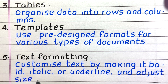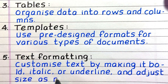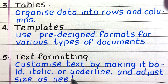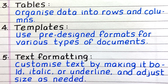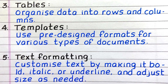Last feature, fifth one: Text Formatting. MS Word can customize text by making it bold, italic, or underlined, and adjust size as needed.